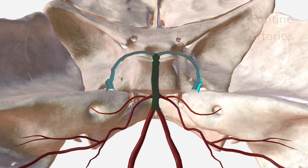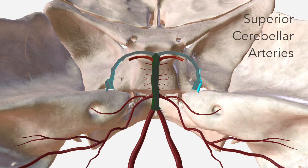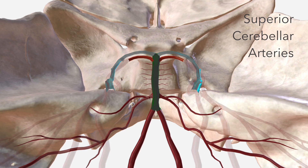Next, we have the pontine arteries, which as their name suggests, supply the pons. And lastly, we have the superior cerebellar artery, which supplies the superior surface of the cerebellum.